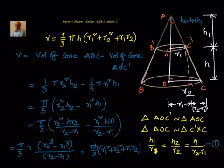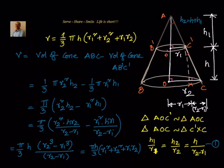So let me summarize. The volume of frustum of a cone is the volume of the original cone minus volume of the small cone. If R1 and R2 are the radii of the two cones with heights H1 and H2, then the difference of volumes is (1/3)π R2² H2 − (1/3)π R1² H1.